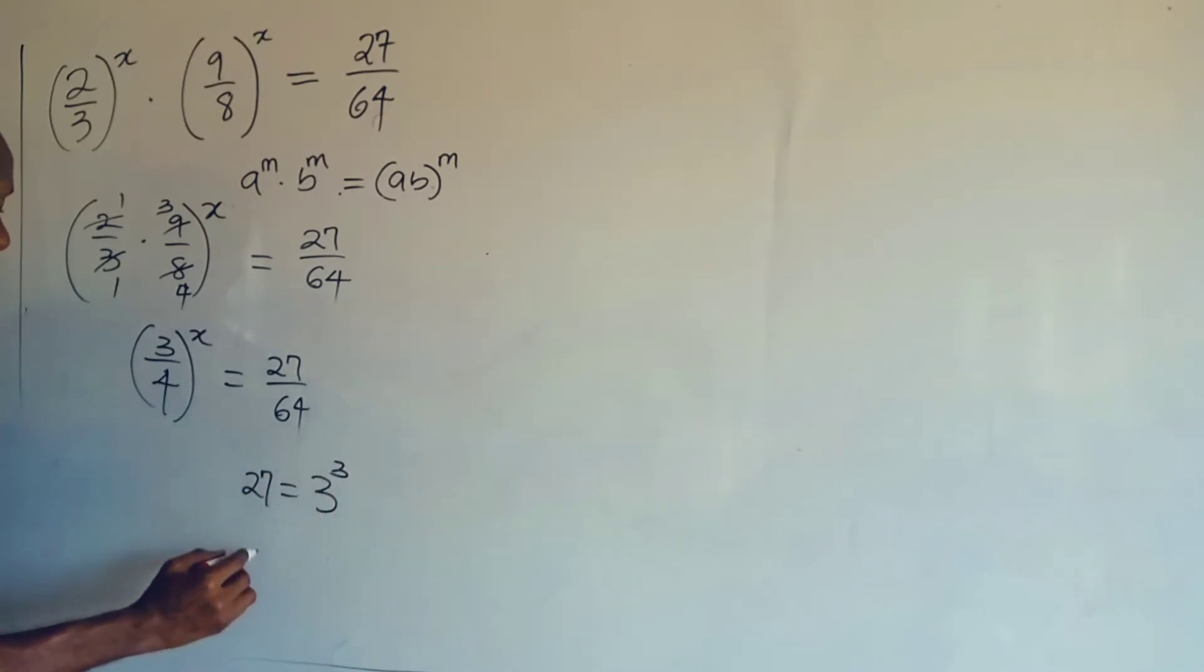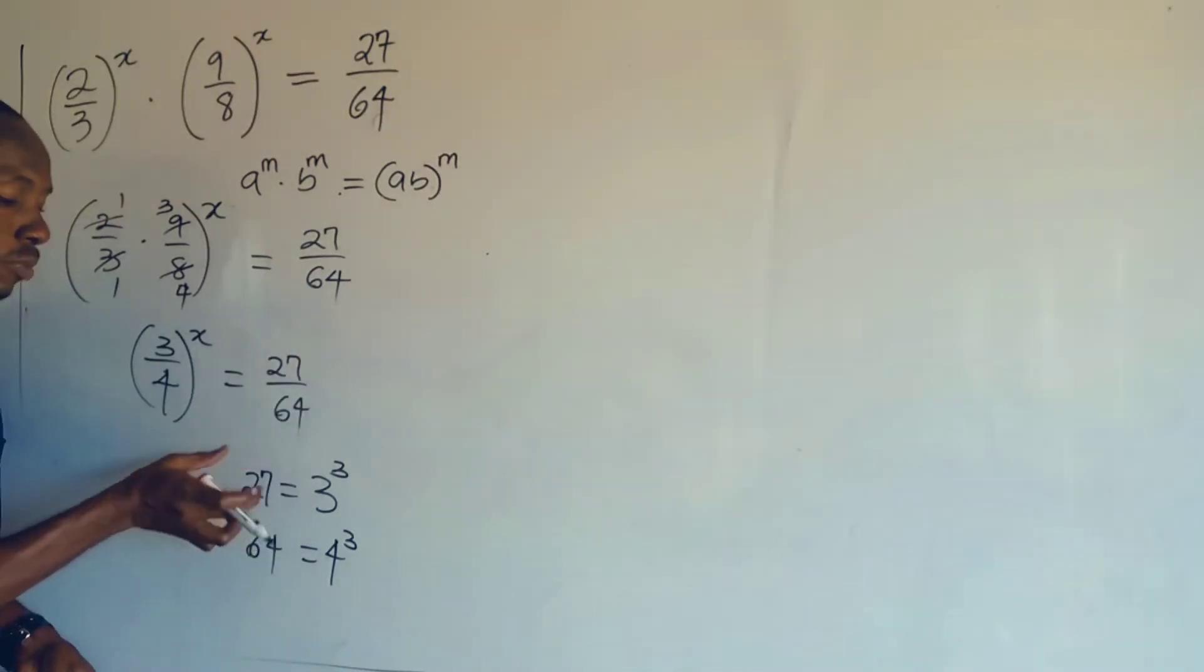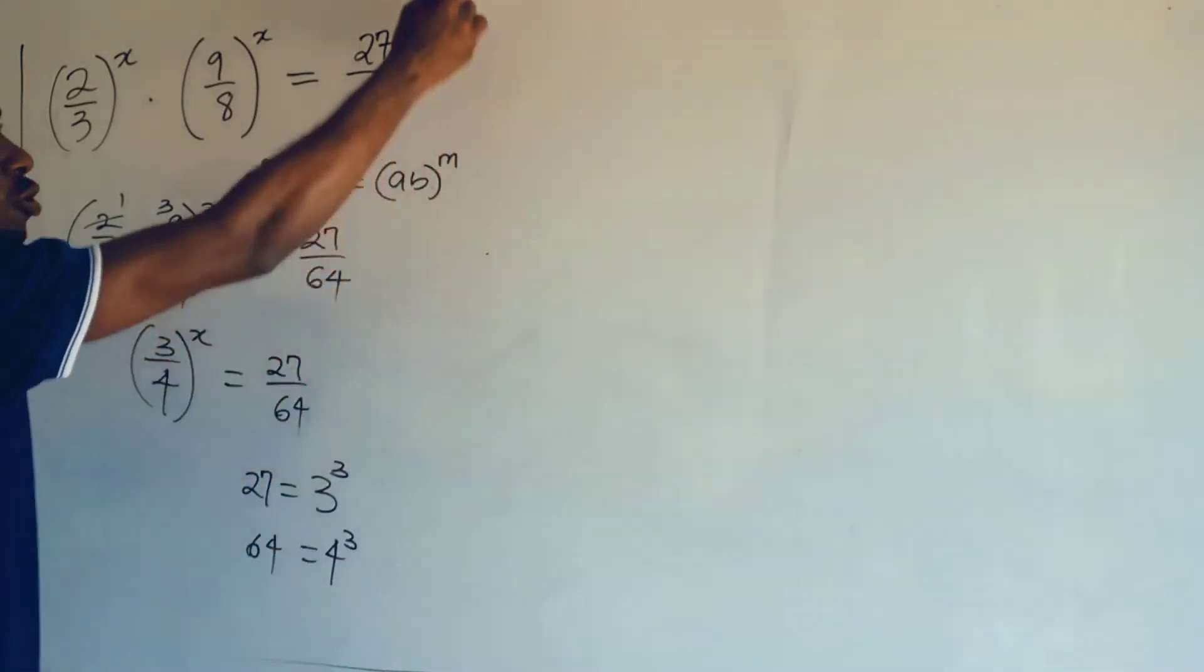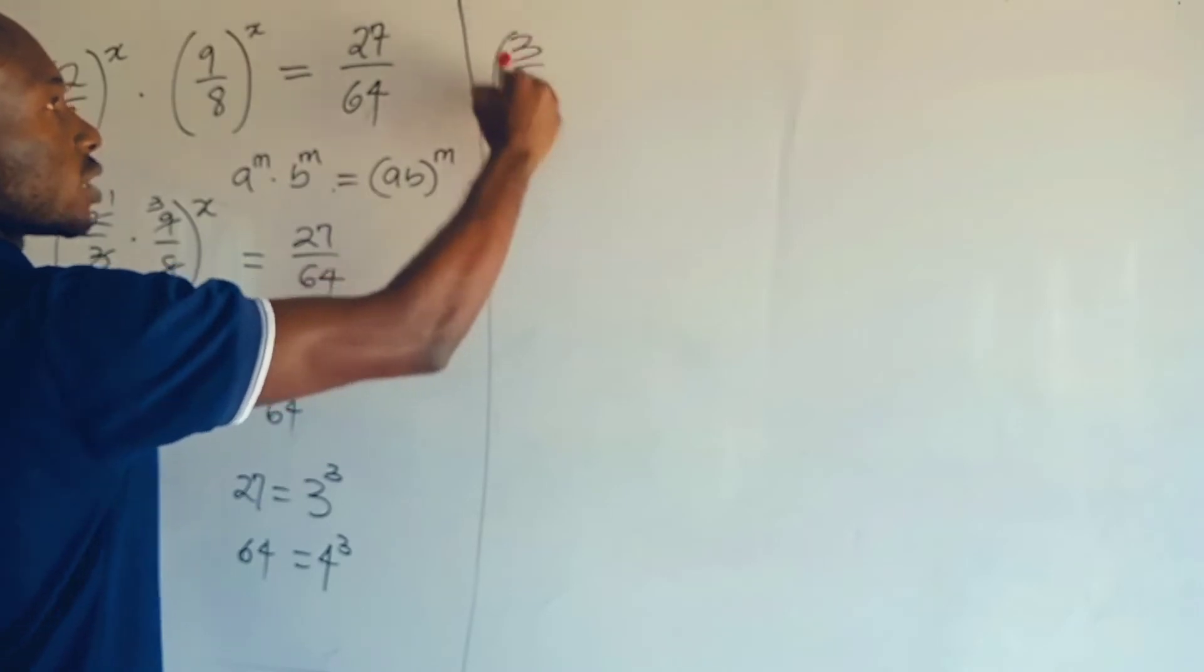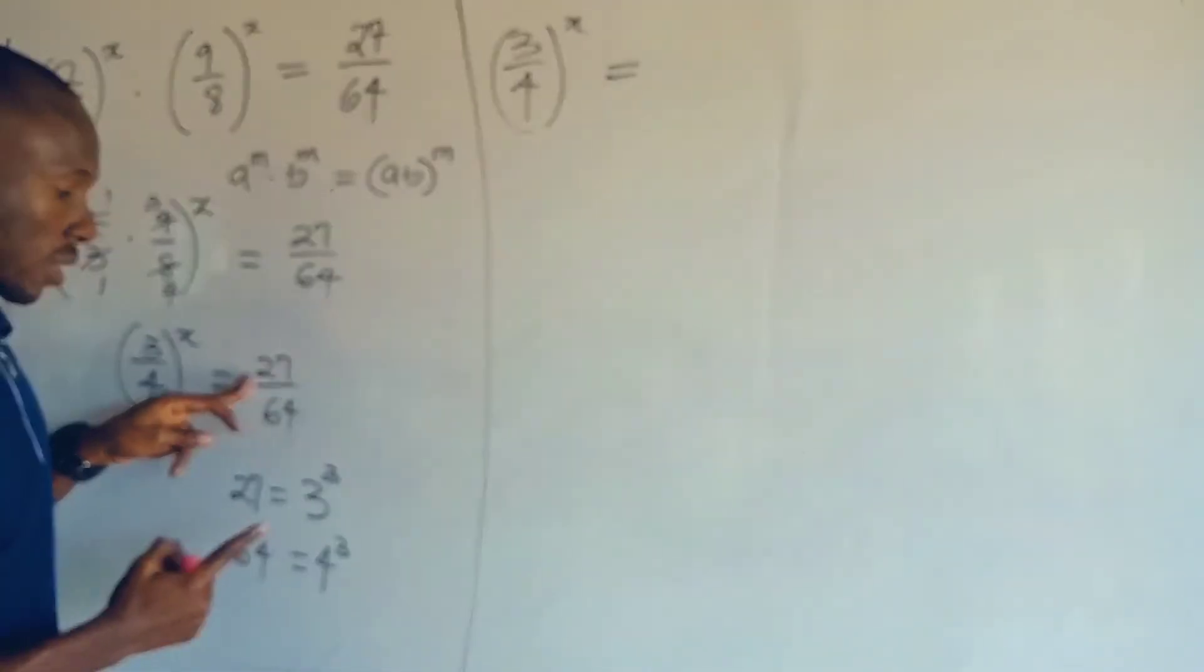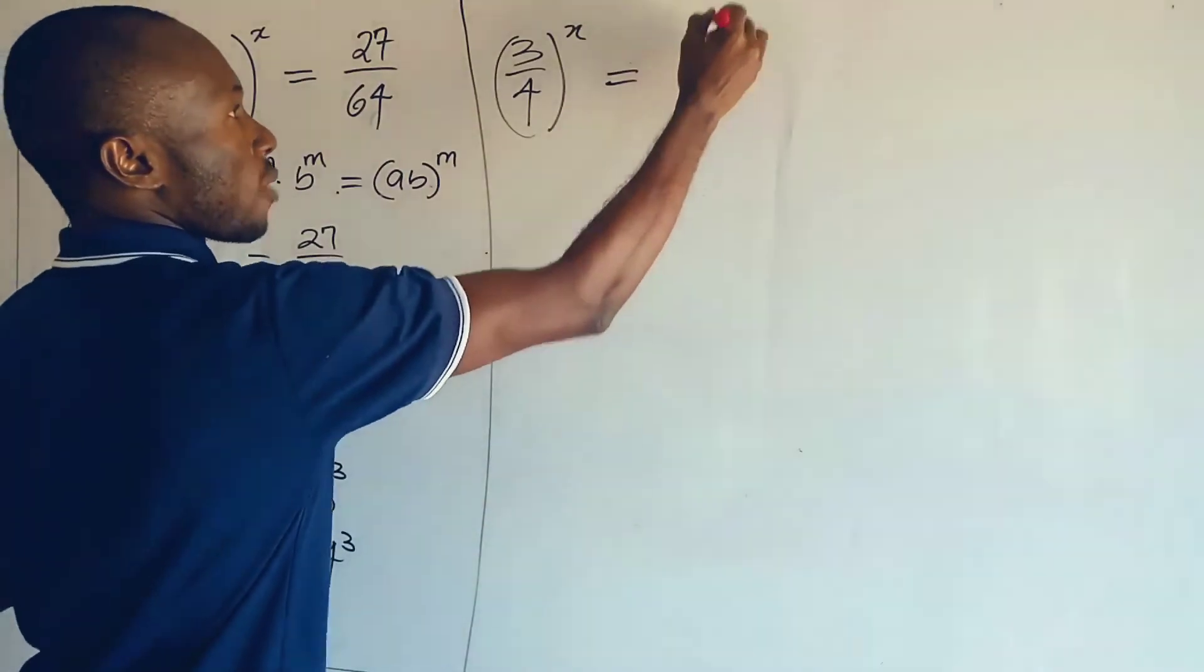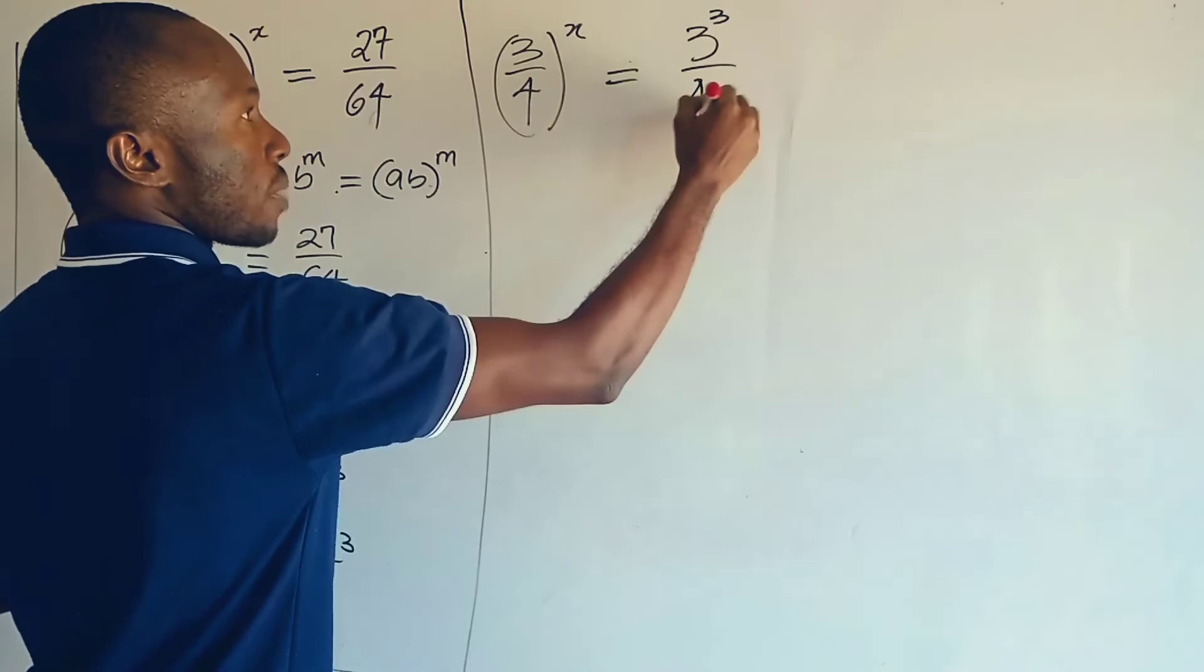So I will write this equation putting the value of 27 as 3^3 and 64 as 4^3. So right here I will have (3/4)^x equals, instead of writing 27 I will write 3^3 over 64 as 4^3.